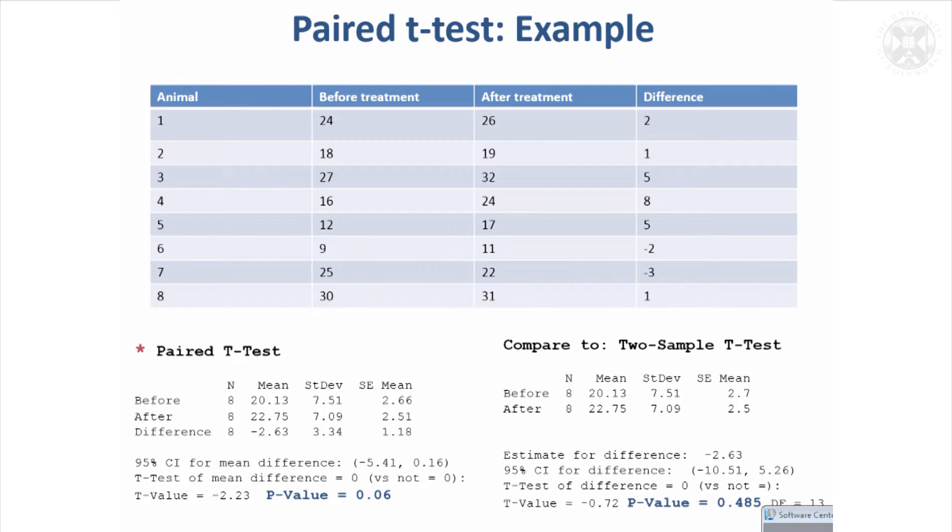If you just did the ordinary T test and worked with the mean of before and the mean of the after treatments and the variability between the animals, you would lose that information on the fact the animals are correlated, their measurements are correlated. It's much better to work with the differences for each animal and then test whether these differences are significantly different from zero based on their mean and variability.